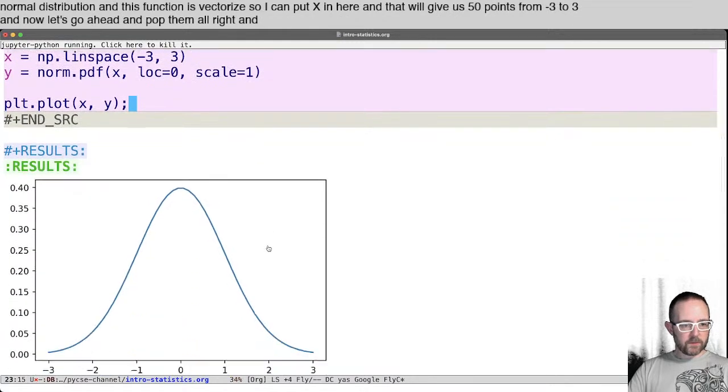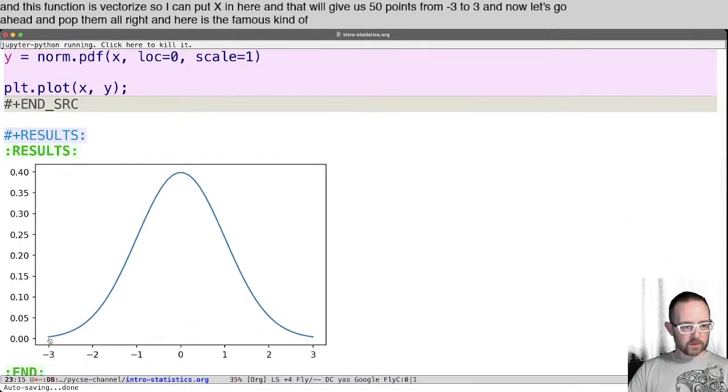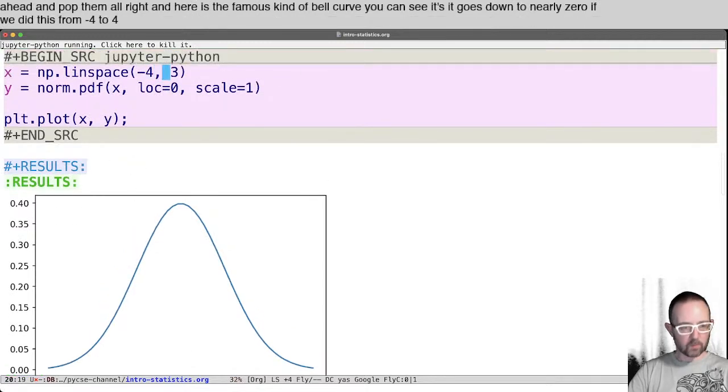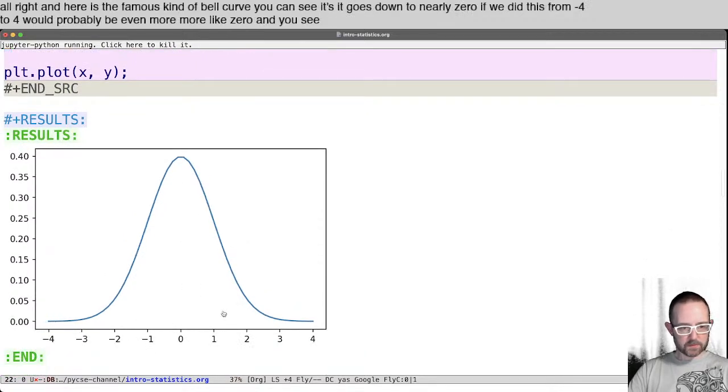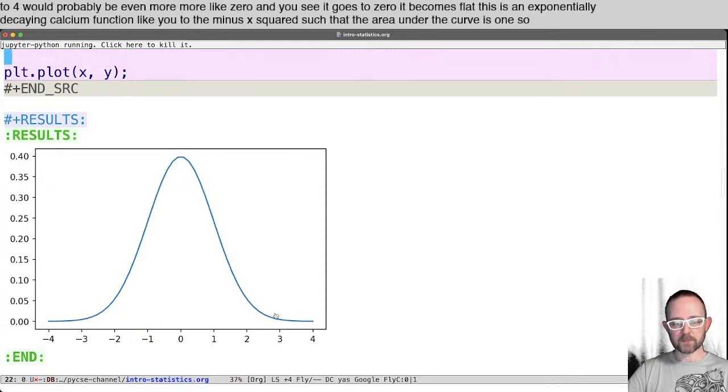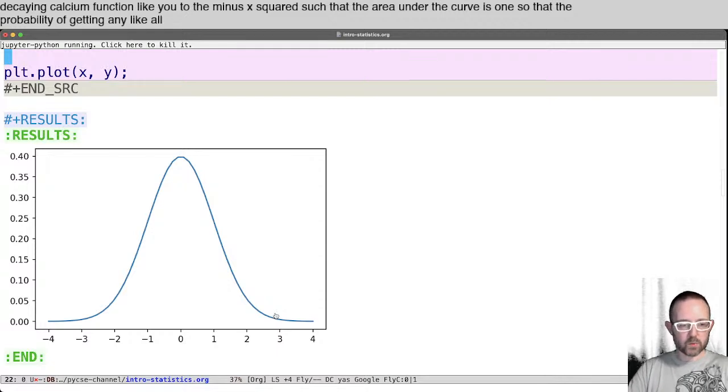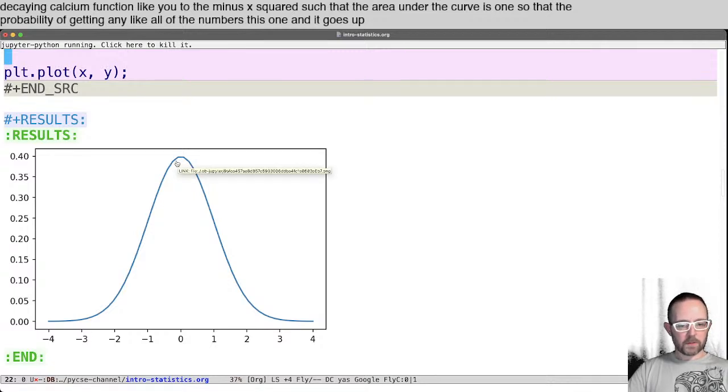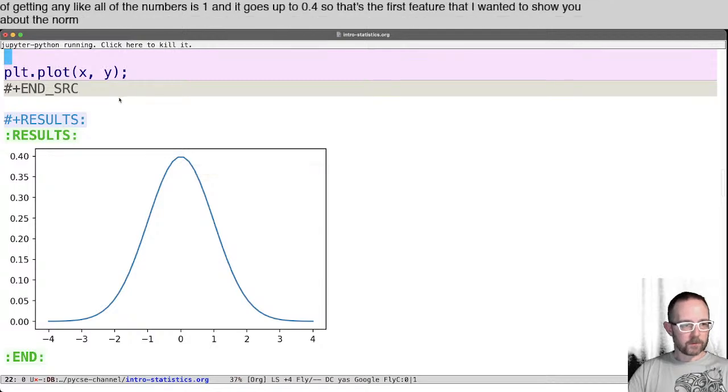All right, and here is the famous kind of bell curve. You can see it goes down to nearly zero. If we did this from minus four to four, it would probably be even more like zero. And you see it goes to zero, it becomes flat. This is an exponentially decaying Gaussian function like e to the minus x squared, such that the area under this curve is one. So the probability of getting all of the numbers is one, and it goes up to 0.4. So that's the first feature that I wanted to show you about the norm function in here.